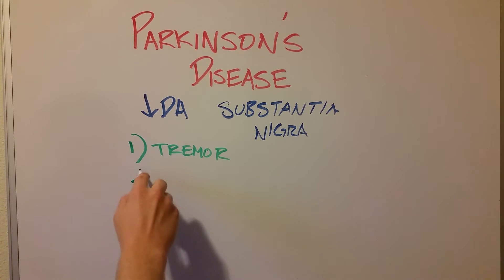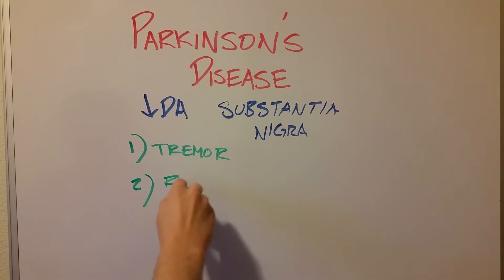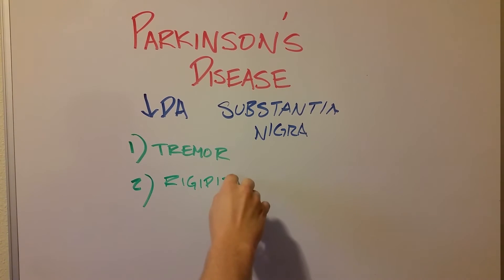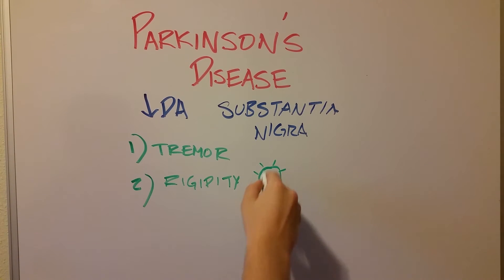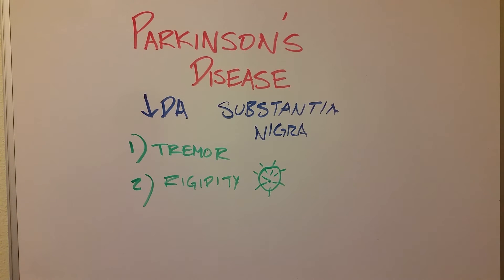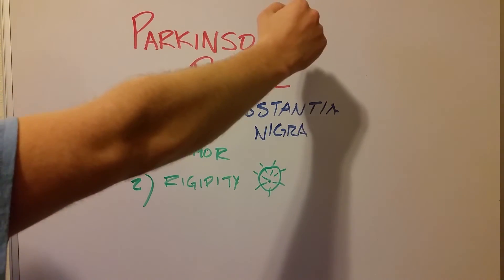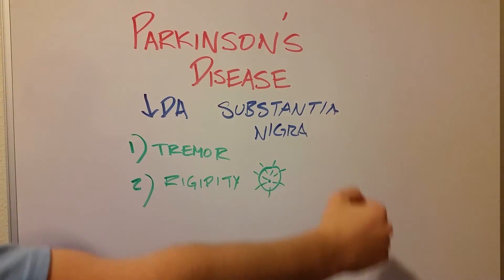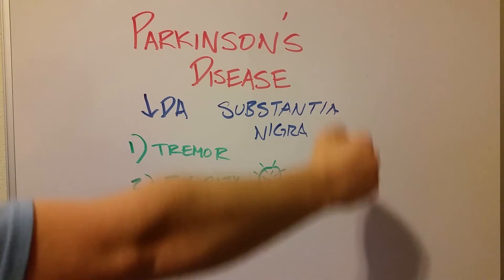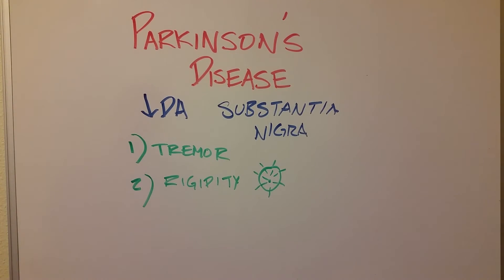The second sign is rigidity, and more specifically cogwheel rigidity. Think about a cogwheel — like what steers a ship — with these different spokes. Cogwheel rigidity is when, if you have the arm in a certain plane and you try to move it, it actually moves like a cogwheel. If the person puts their arm here and I move that arm down, it doesn't come down in one smooth motion. Rather, it comes down in a cogwheel, rigid motion. There's no smooth, fluid motion.